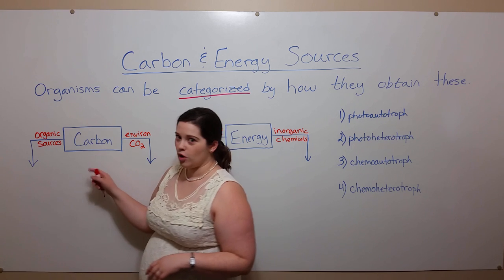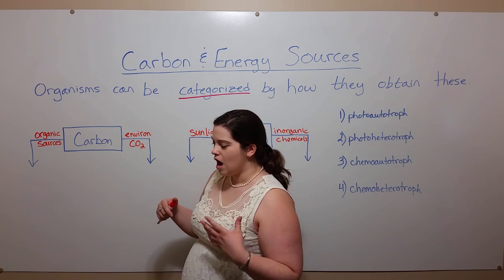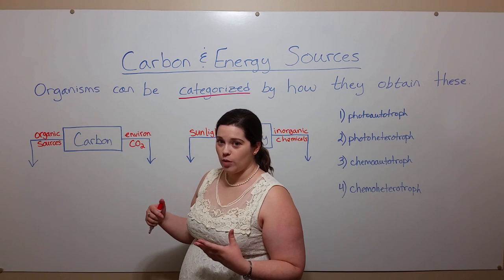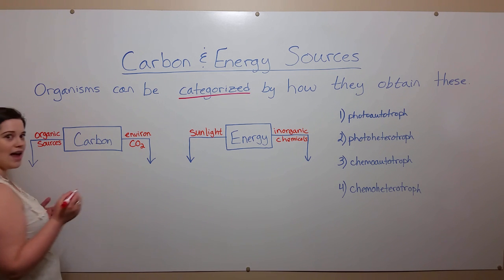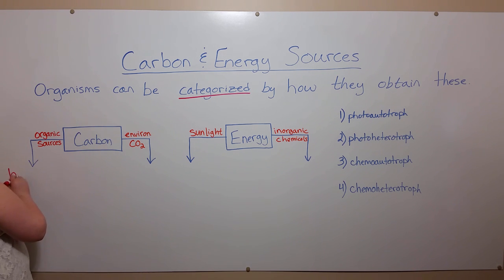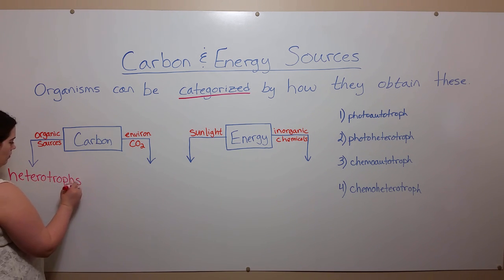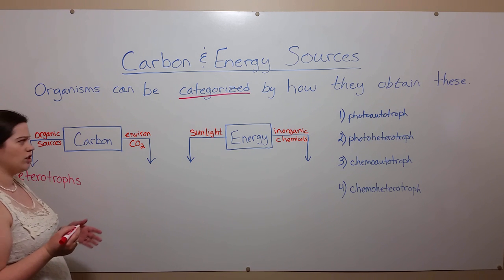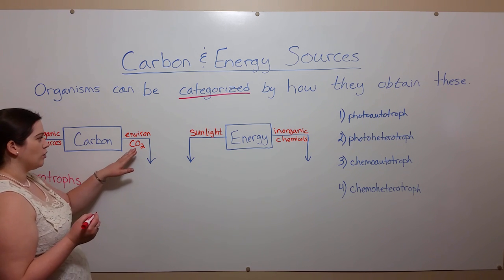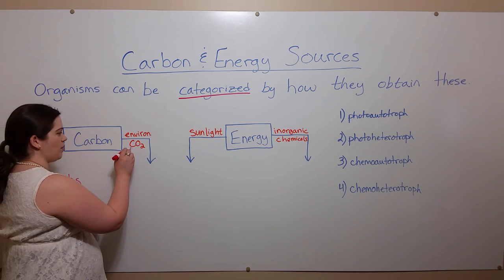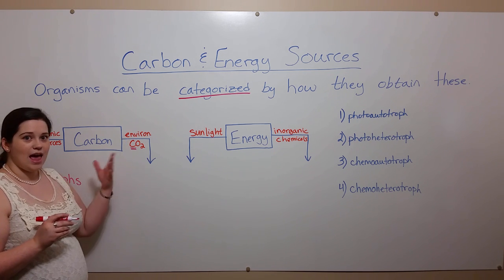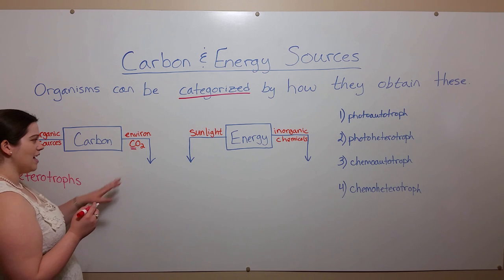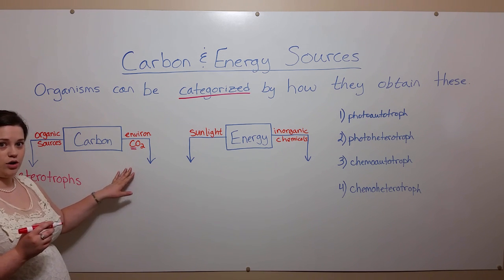Let's talk first about different carbon sources. Organisms that obtain their carbon from various organic sources in their environment are called heterotrophs. The other way in which some organisms can obtain carbon is through environmental carbon dioxide — carbon dioxide contains carbon and some organisms can take it up and harvest it for use in other ways. These organisms are called autotrophs.